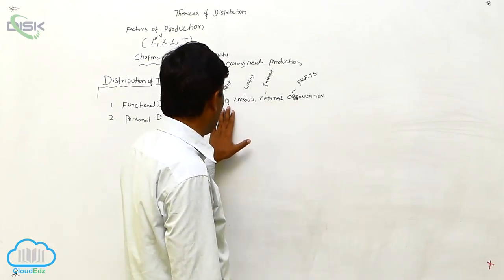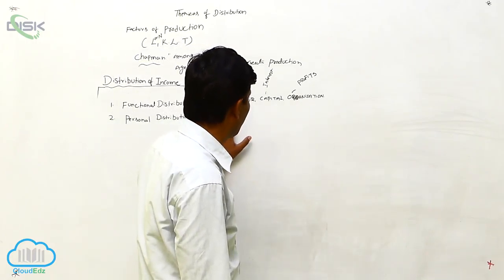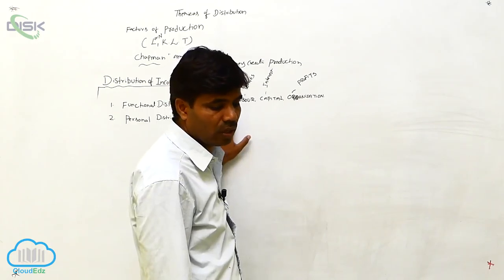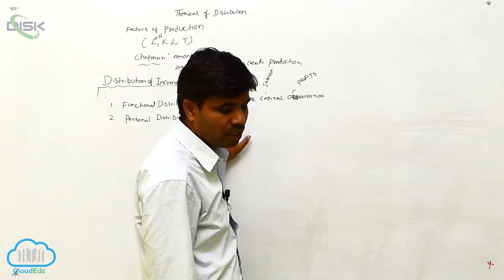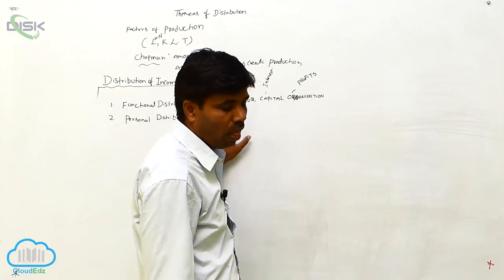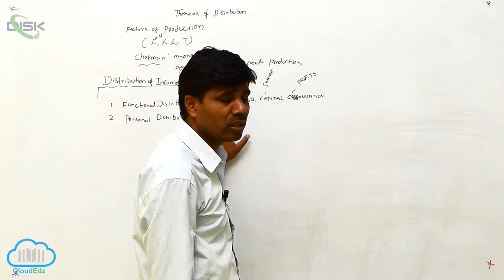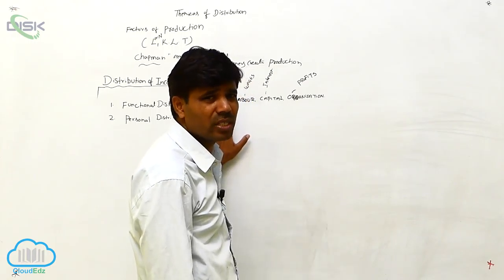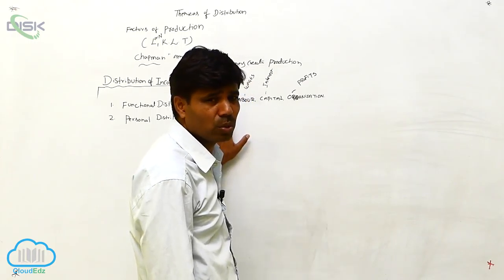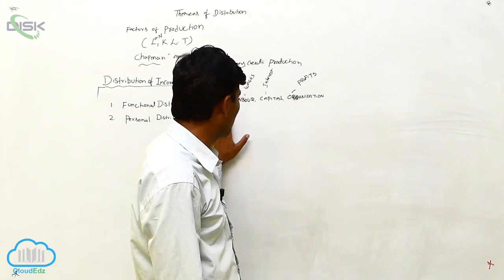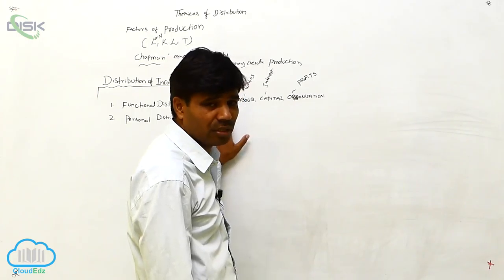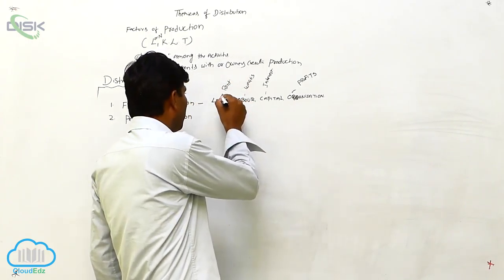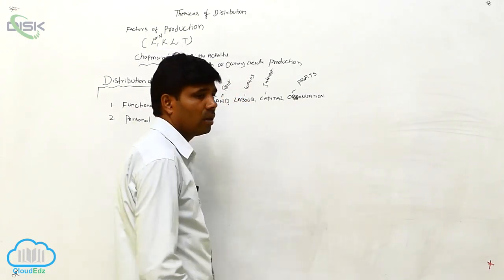So these are the four factors — land, labour, capital, and organization — and we pay particular remunerations to each when using them in the production of goods and services.